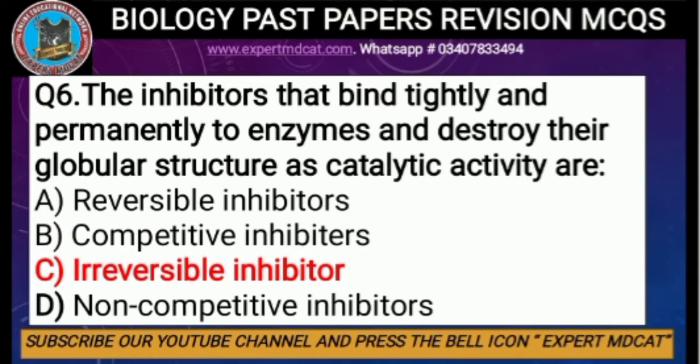Question number six: the inhibitors that bind tightly and permanently to enzymes and destroy their global structure and catalytic activity are called. We have two types of inhibitors — reversible inhibitors form weak bonds with active sites and can be overcome by changing substrate concentration. But irreversible inhibitors completely destroy the enzyme's structure, blocking catalytic activity permanently. These are called irreversible inhibitors.